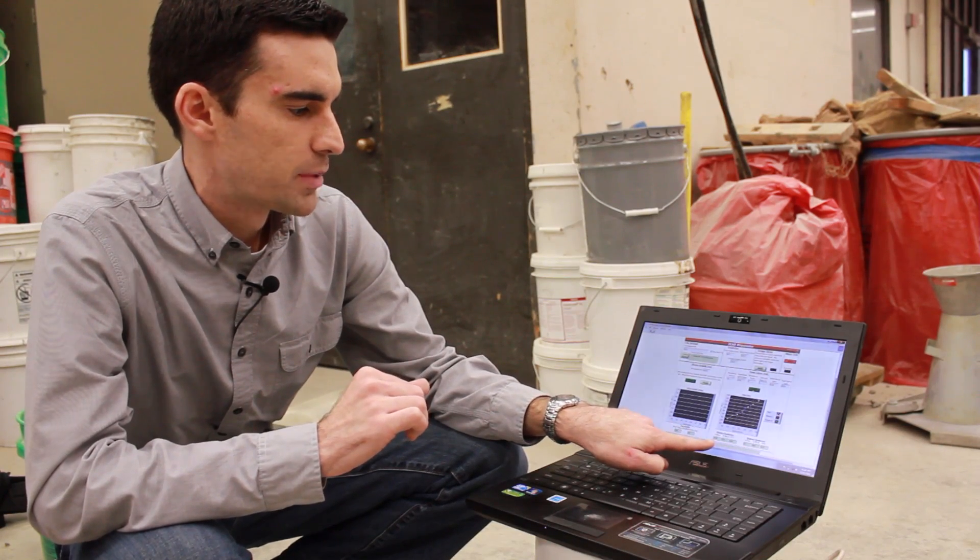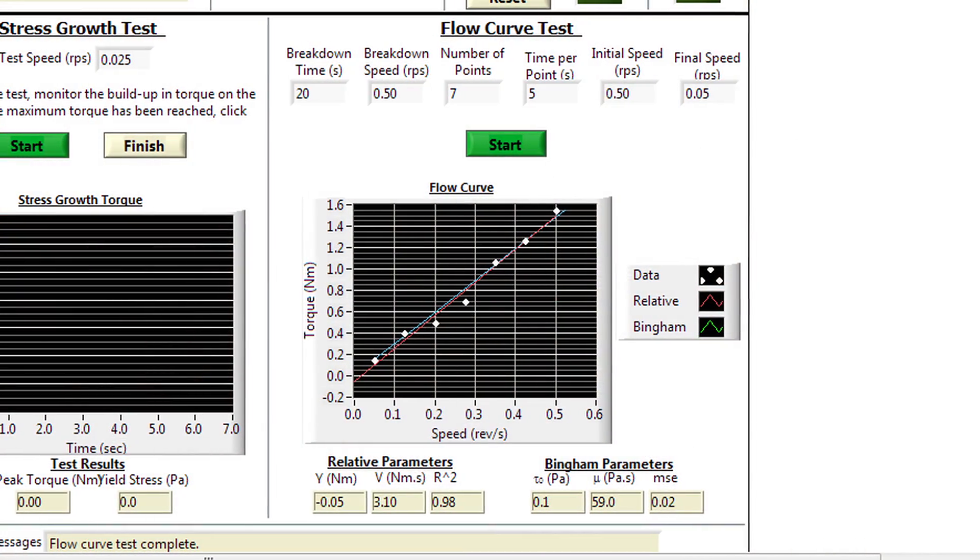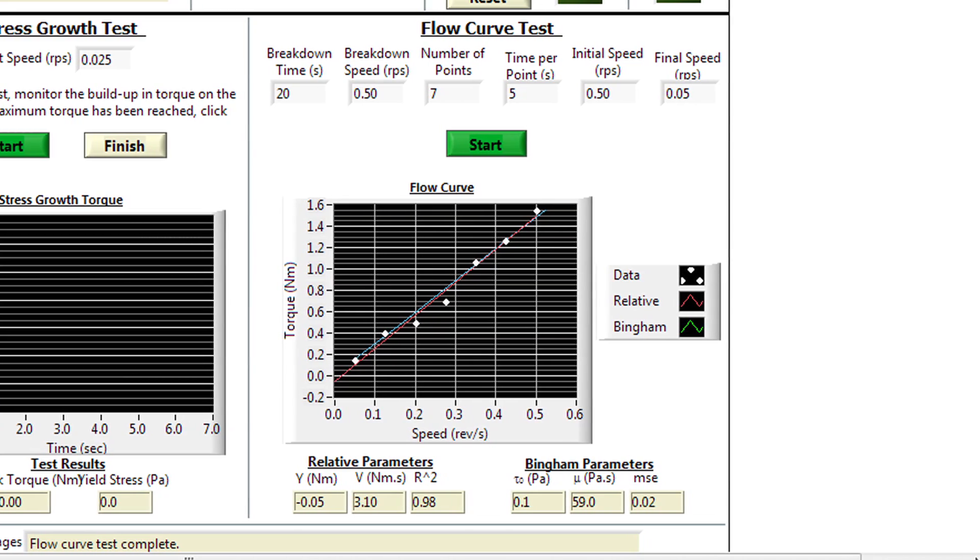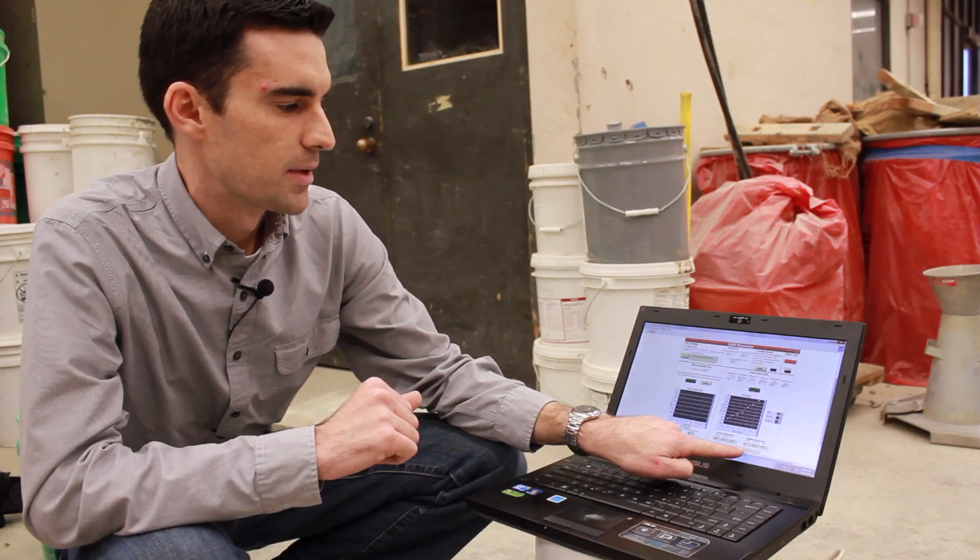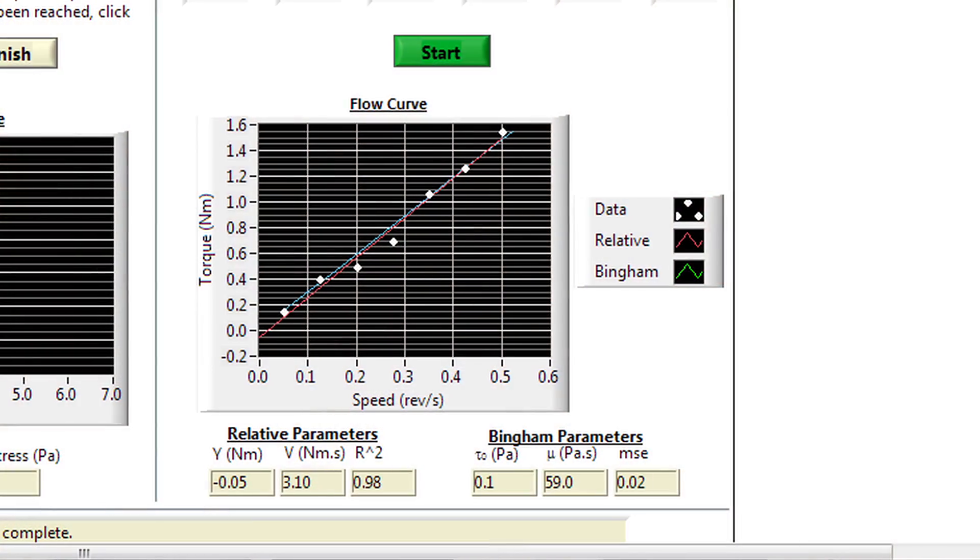The relative parameters are essentially zero for the Y, or the intercept of the straight line. And V, or the slope, is 3.1. Our straight line fit is very good here. We have an R squared of 0.98. Looking at the Bingham parameters, we have a yield stress of zero, which is very typical of self-compacting concrete, which is what we're testing here today. And then we have a plastic viscosity of 59.